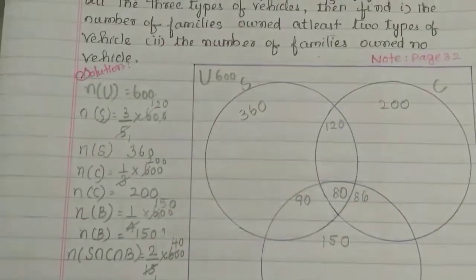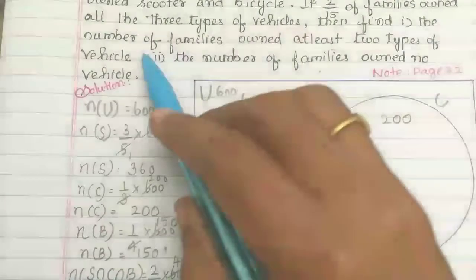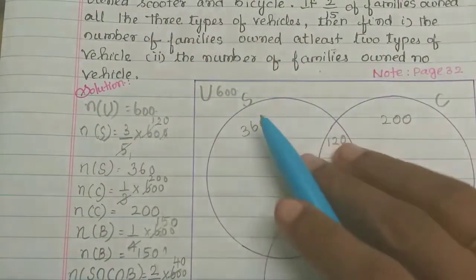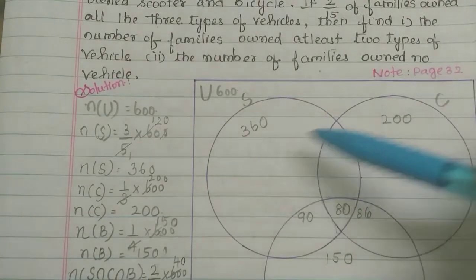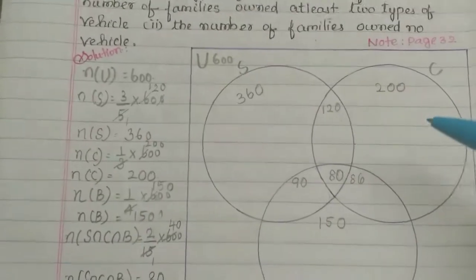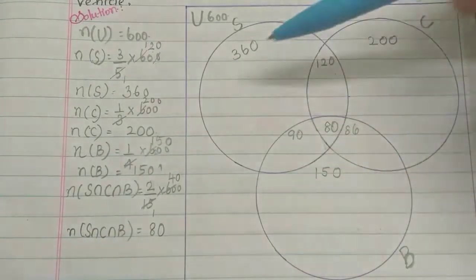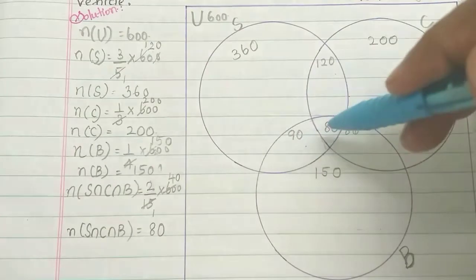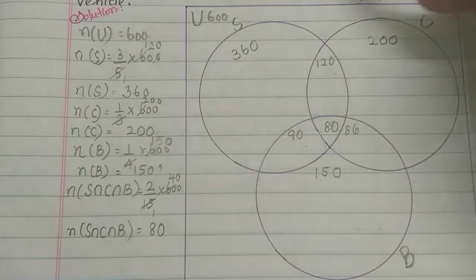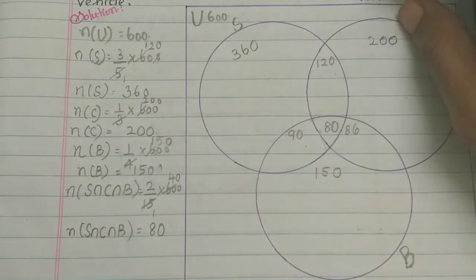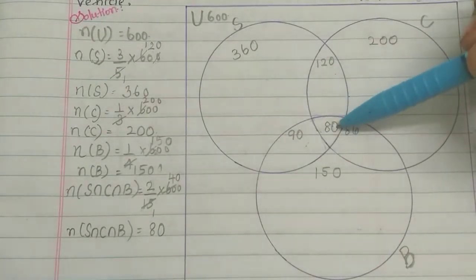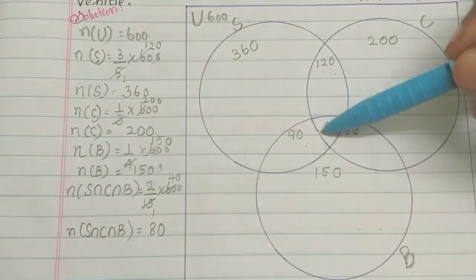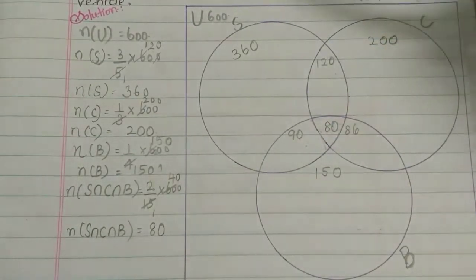Find the number of families that owned at least 2 types of vehicles — meaning minimum 2 vehicles. Scooter and car use, car and bicycle use, scooter and bicycle use, and all 3 types of vehicles use. For these 4 parts, you can have the answer. In the scooter circle of 360, there are all the mixed types.